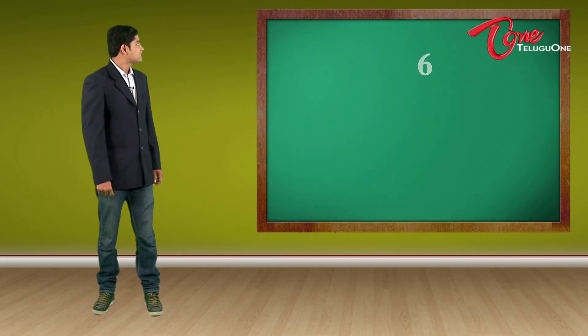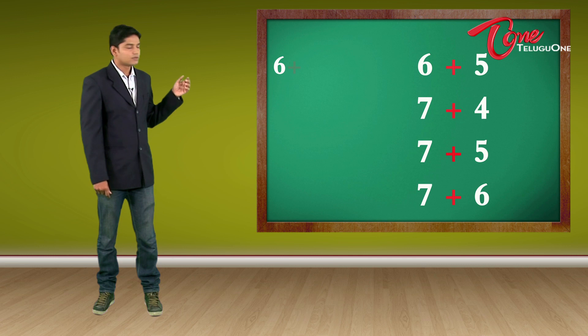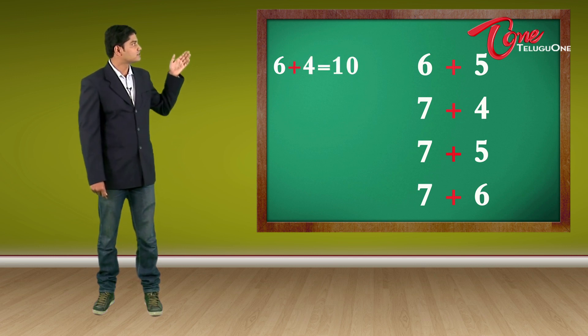There are only 4 examples that are left now. That is, 6 plus 5, 7 plus 4, 7 plus 5 and 7 plus 6. So 6 plus 4 are friends. 6 and 4 are friends. So 6 plus 4 is 10.